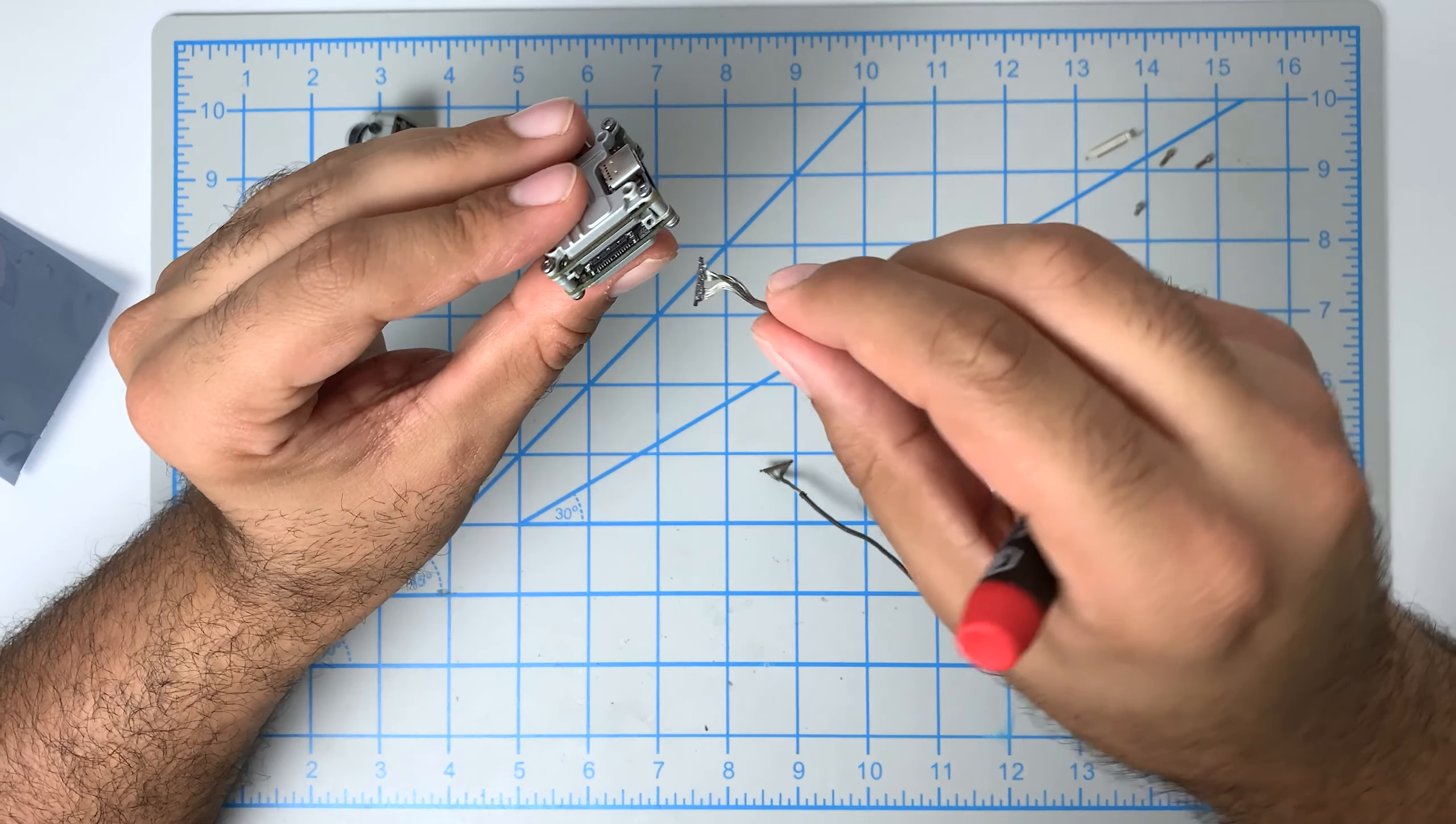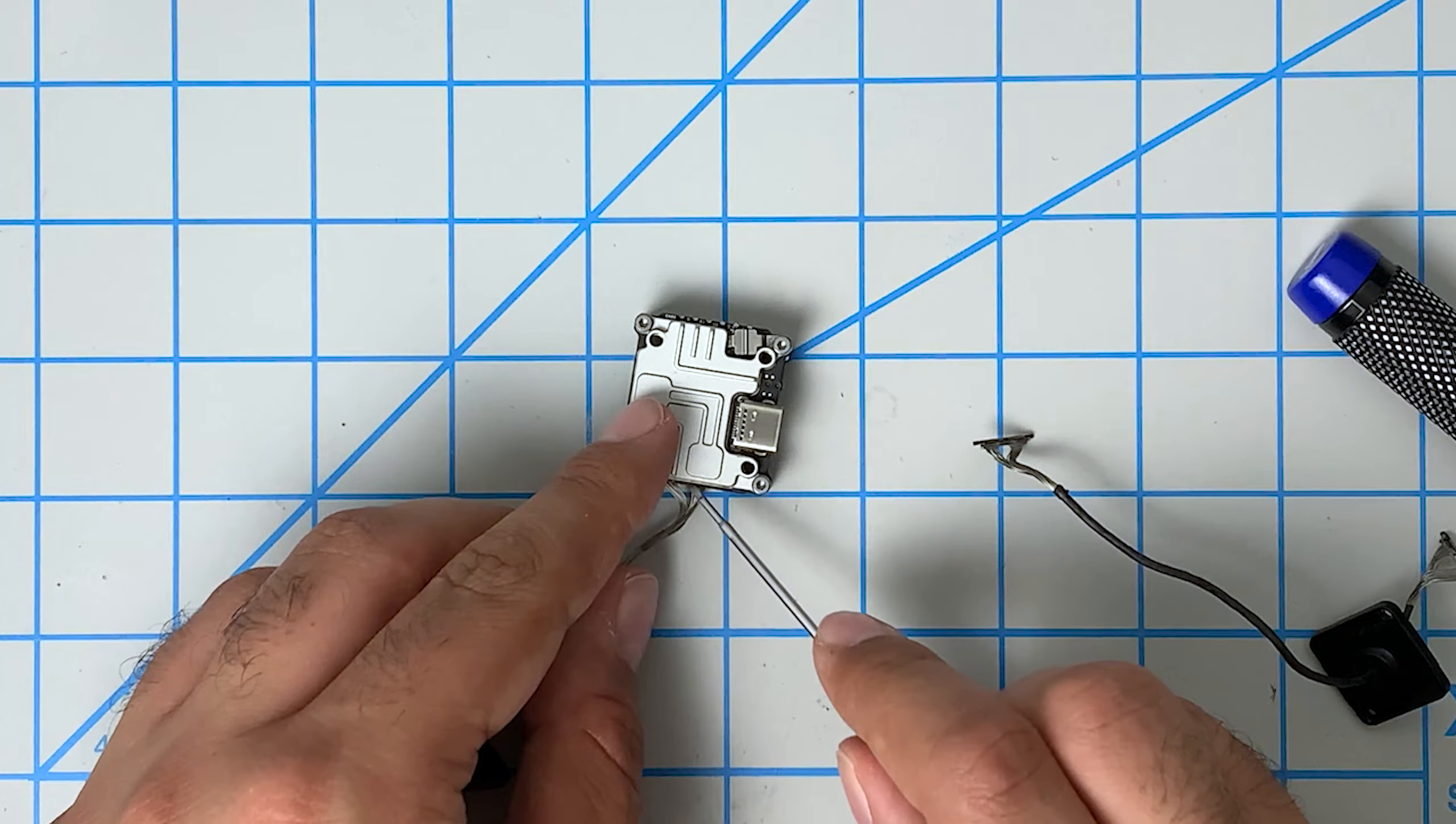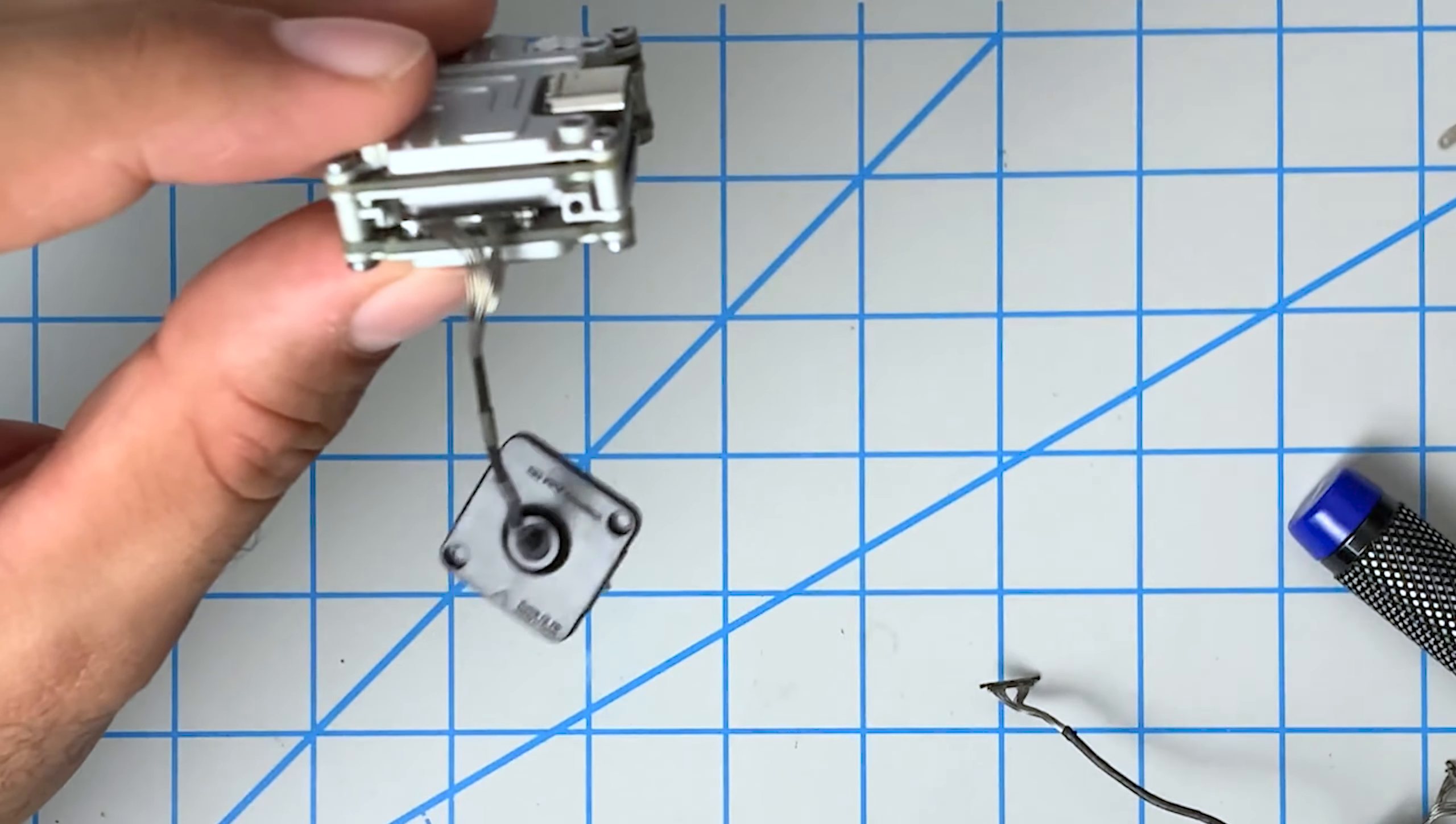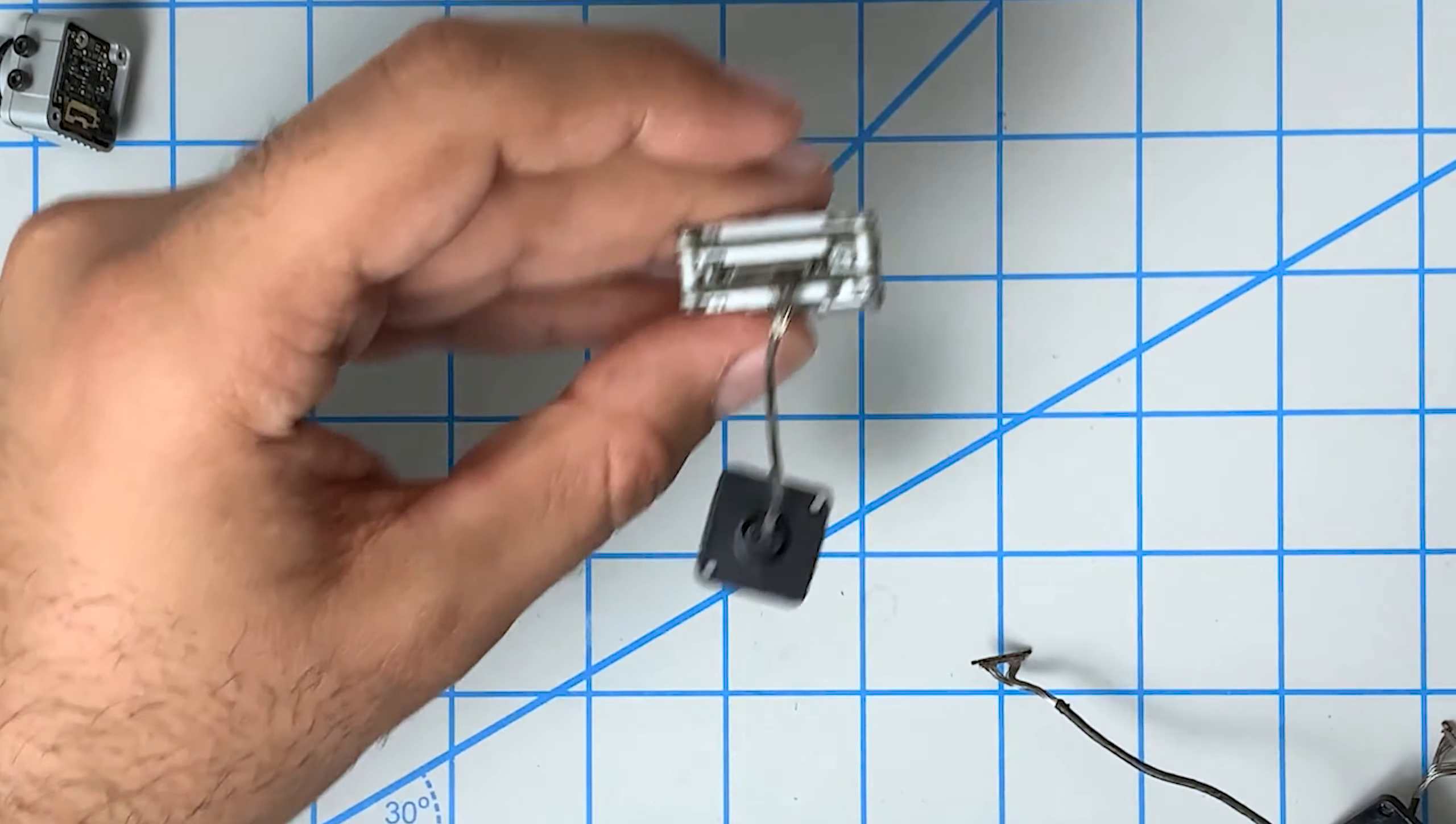Now we'll start by putting this side in first, because this is the part that is a little bit more difficult. So now that we have this piece in, we'll grab this piece, which holds the cable down. And we'll start by sticking this piece up into a little knob and then bring it around.